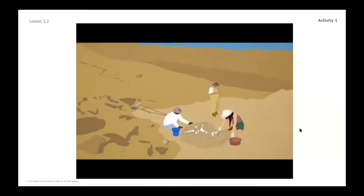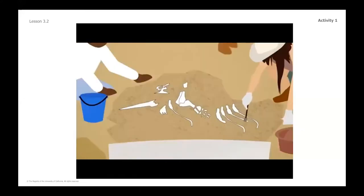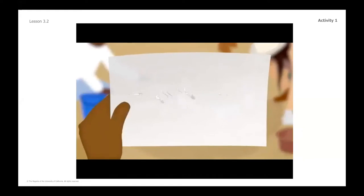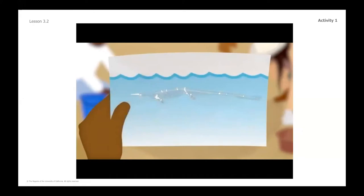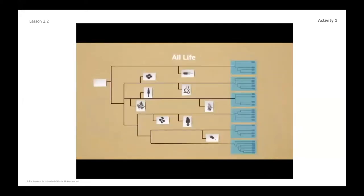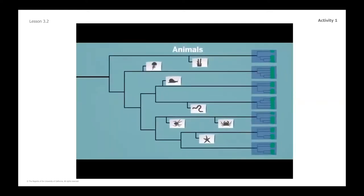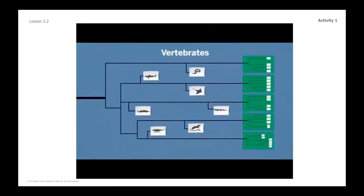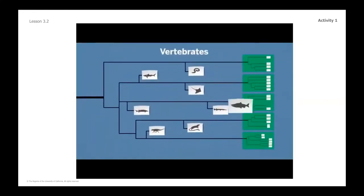When paleontologists uncover fossilized bones in the ground, they can be all mixed up and broken. They have to put the bones back together and then try to reconstruct the skeleton. But it's hard to tell just by looking at the assembled fossils what it's most closely related to — for example, it could have belonged to land-living animals or animals that lived in the water. Paleontologists study the fossilized body structures to see where it belongs on the evolutionary tree. Body structures have been passed down since the first living thing.